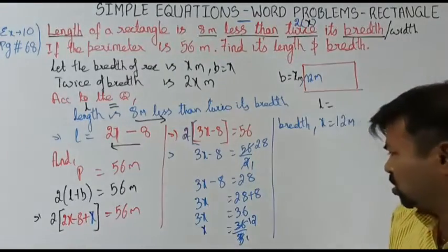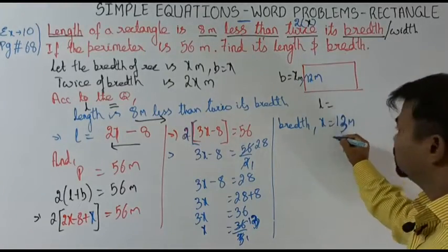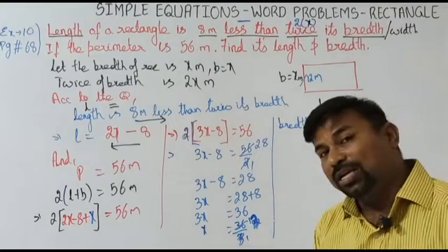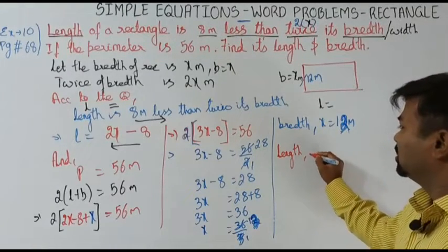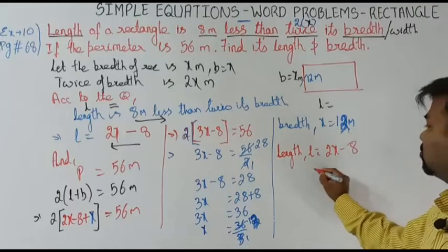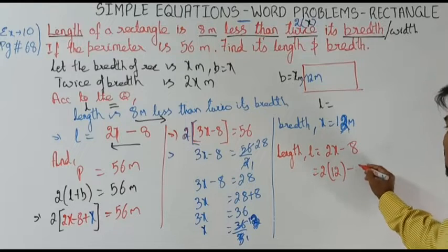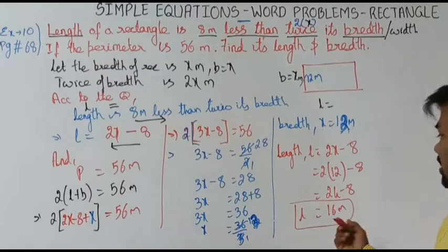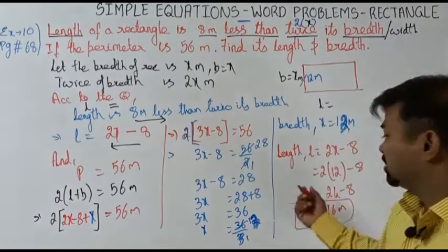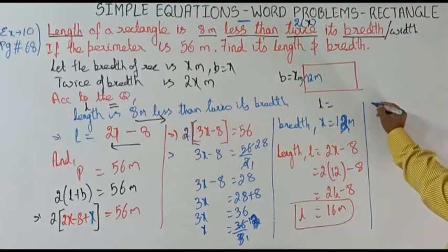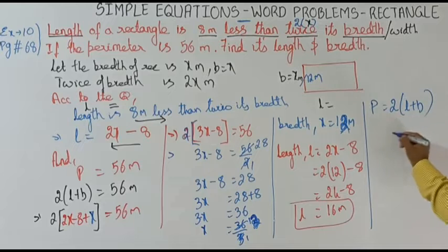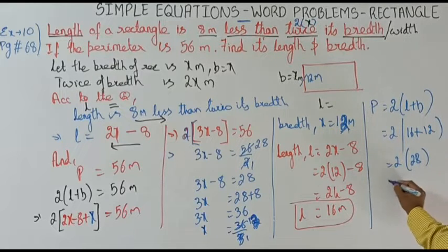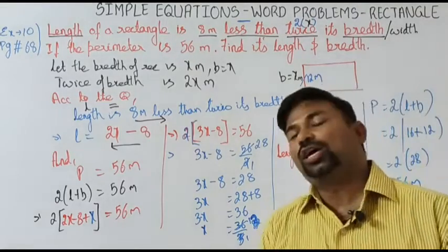So breadth equals 12 meters. Now let's get back to find the length. Length equals 2x minus 8, which is 2 into 12 minus 8, that is 24 minus 8, equals 16 meters. The length is 16 meters and the breadth is 12 meters. Let us verify: perimeter equals 2 into (16 + 12) equals 2 into 28 equals 56 meters. Verified!